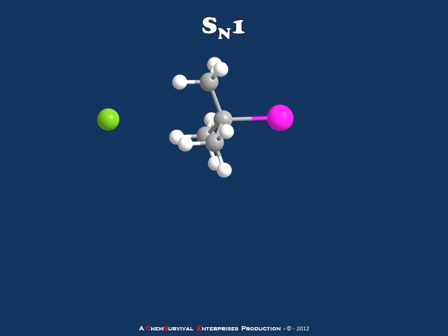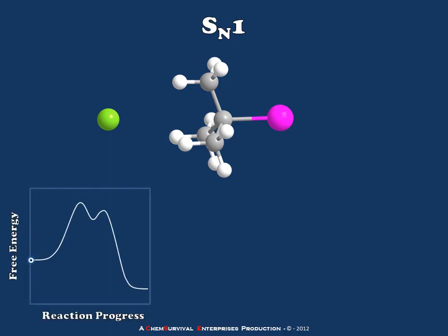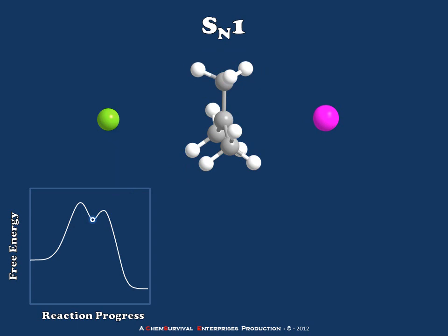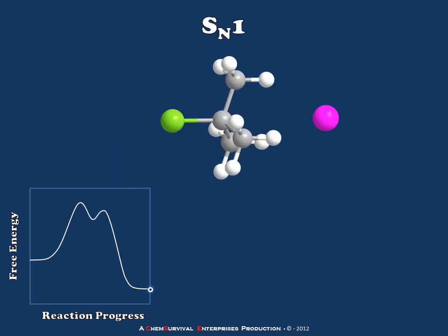As the SN1 reaction initiates, the leaving group departs from the substrate, and in doing so, it creates a stable intermediate. On the energy diagram for this reaction, there is a local minimum on the reaction coordinate which corresponds to the formation of a stable intermediate carbocation — in this case a t-butyl cation. This stable intermediate is then attacked by the nucleophile, and in this step we reach the more stable final product. So the SN1 reaction occurs in two isolated steps: first, departure of the leaving group to form the intermediate carbocation, and second, the nucleophilic attack of that carbocation to form the final product.